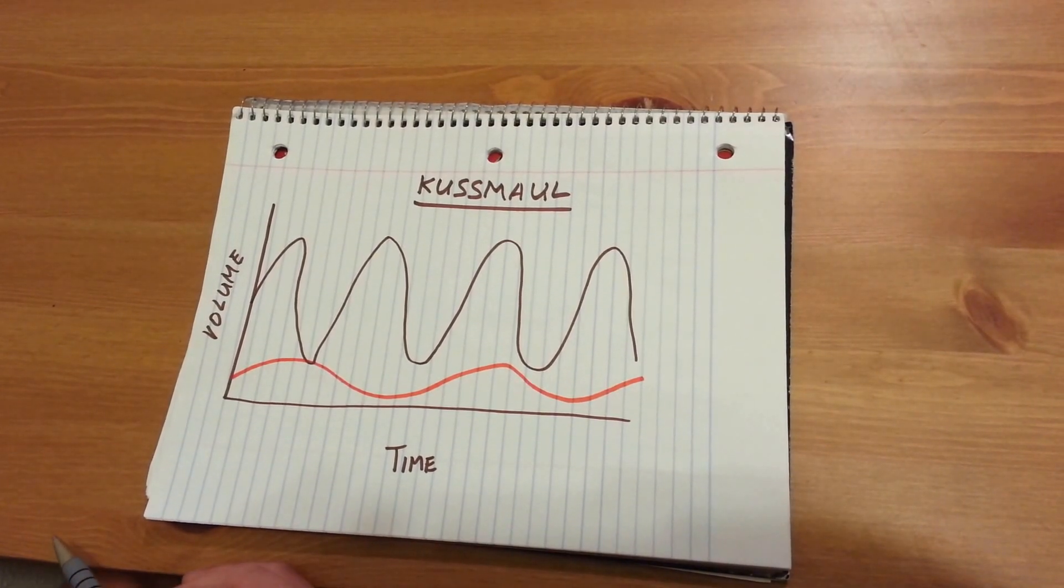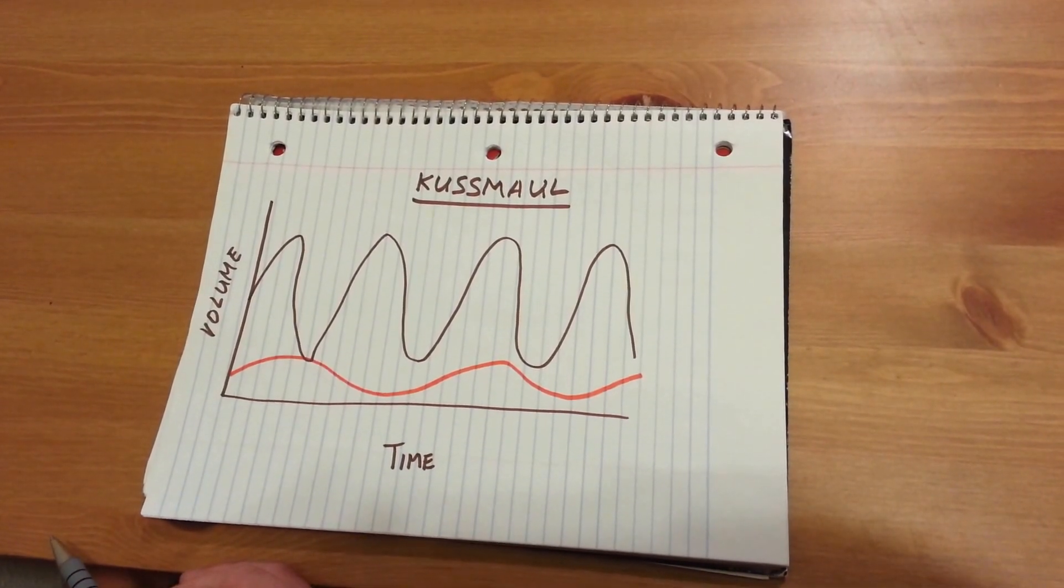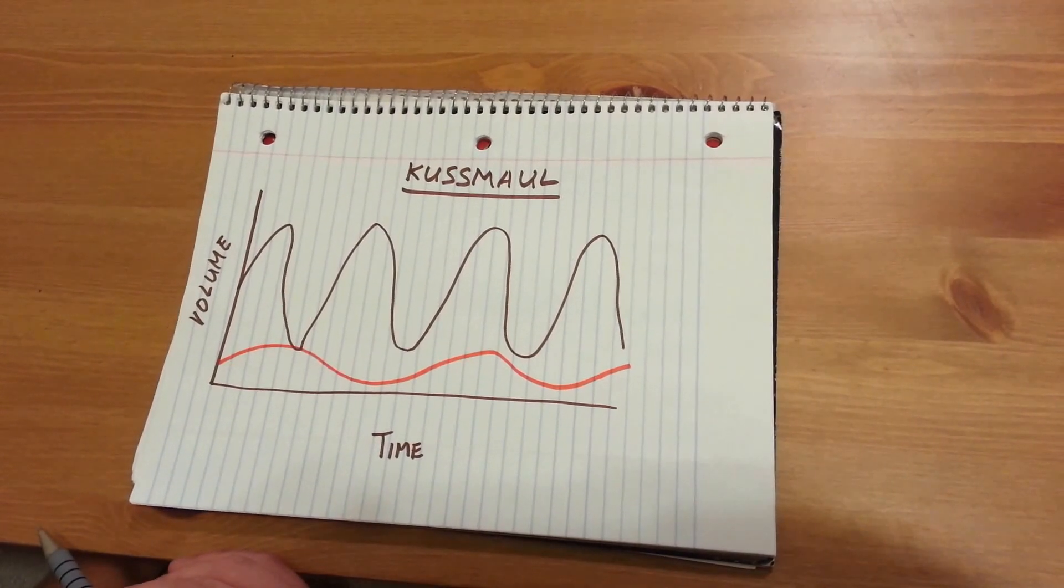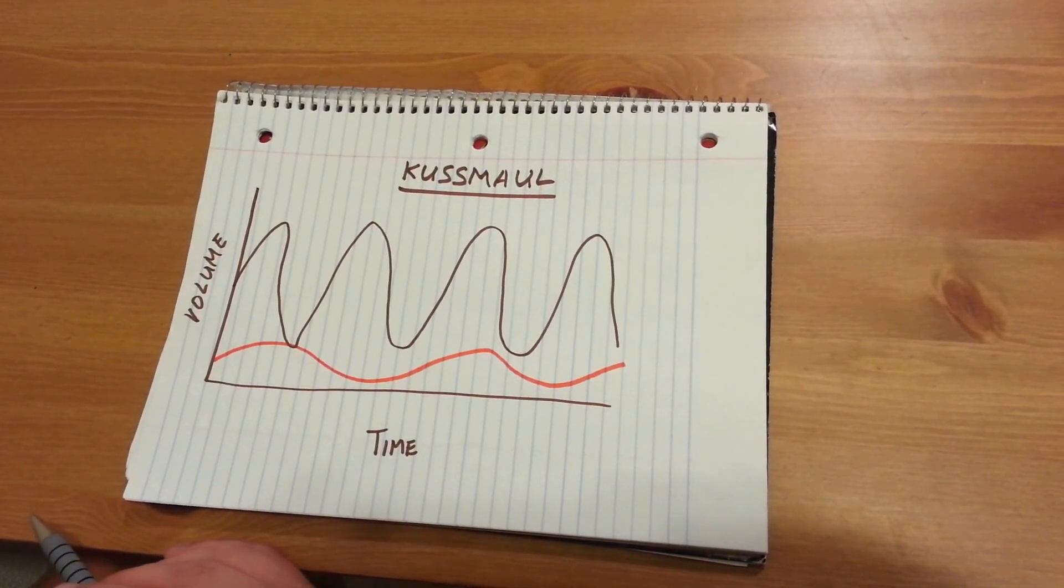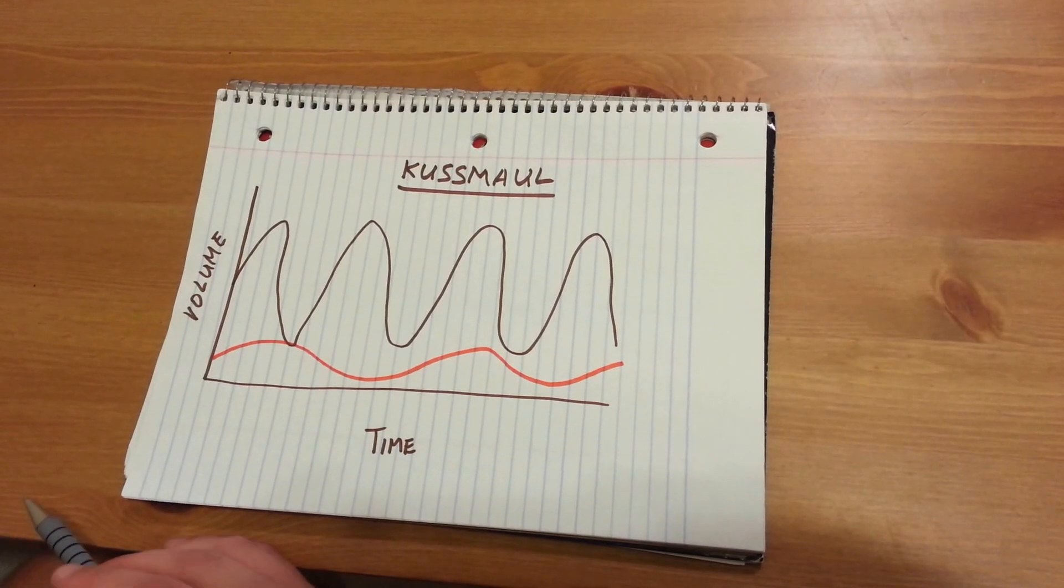The goal of Kussmaul breathing, and hyperventilation in general for that matter, is to reduce the amount of carbon dioxide in the bloodstream by increasing the amount that we exhale, thus blowing off excess waste gas or carbon dioxide.